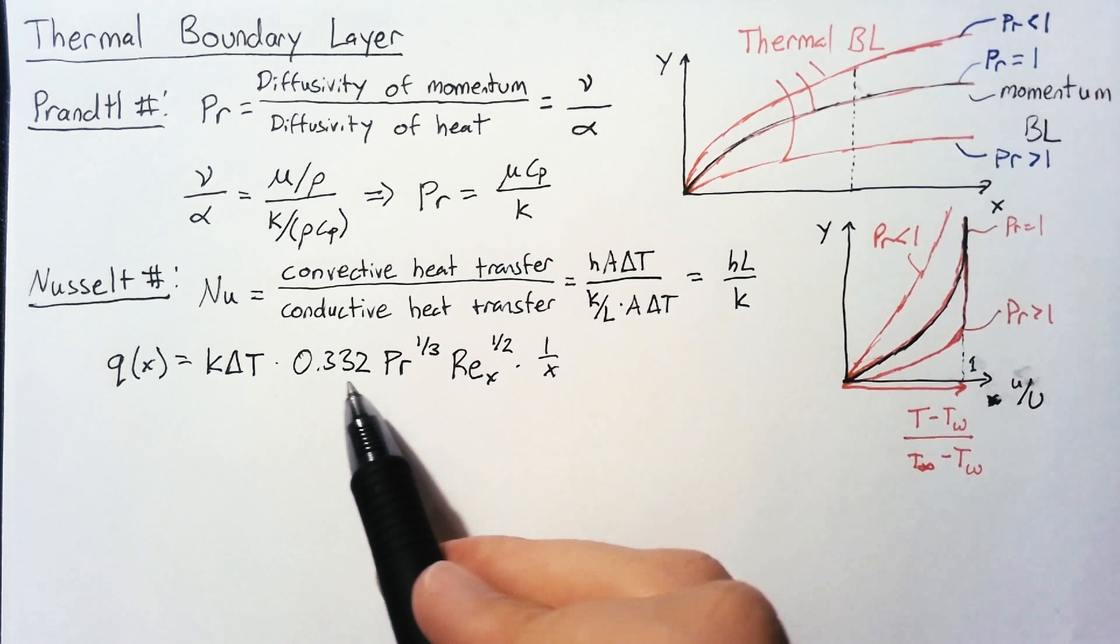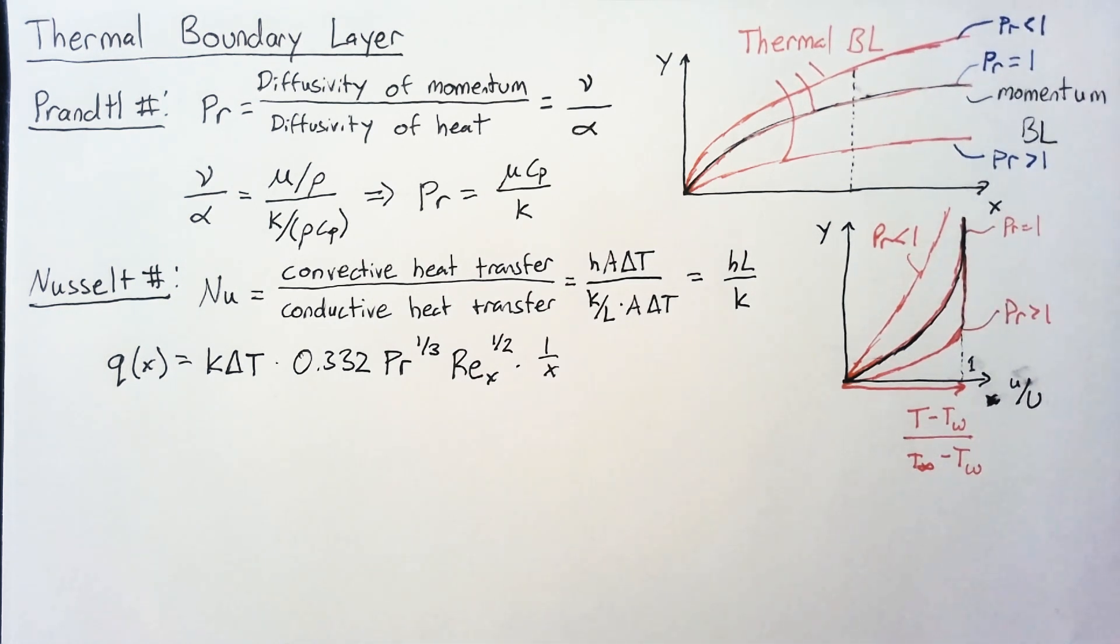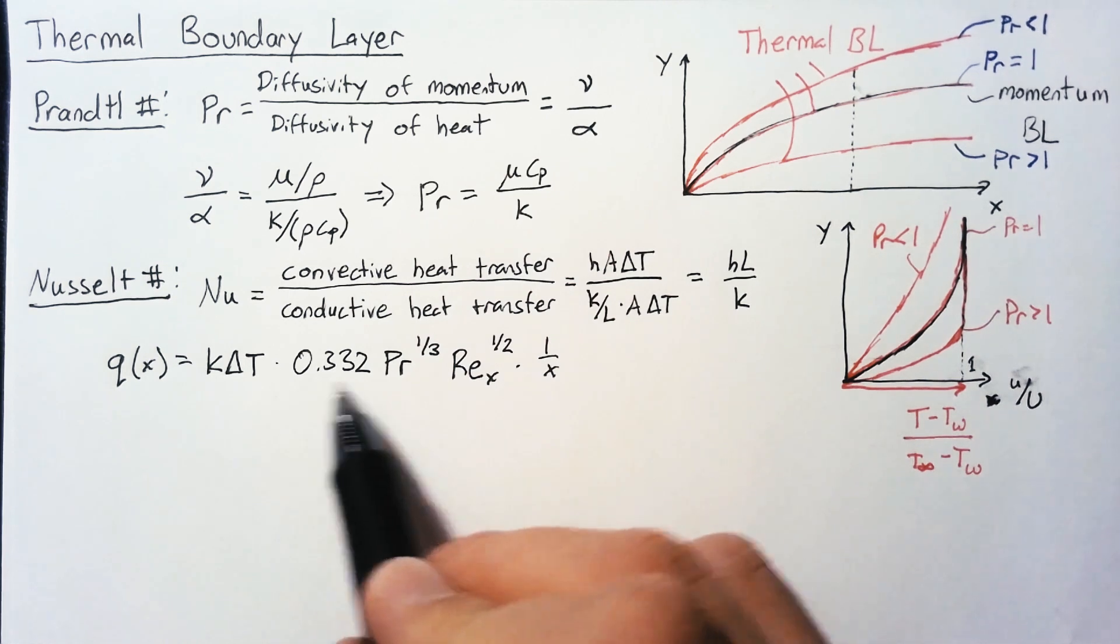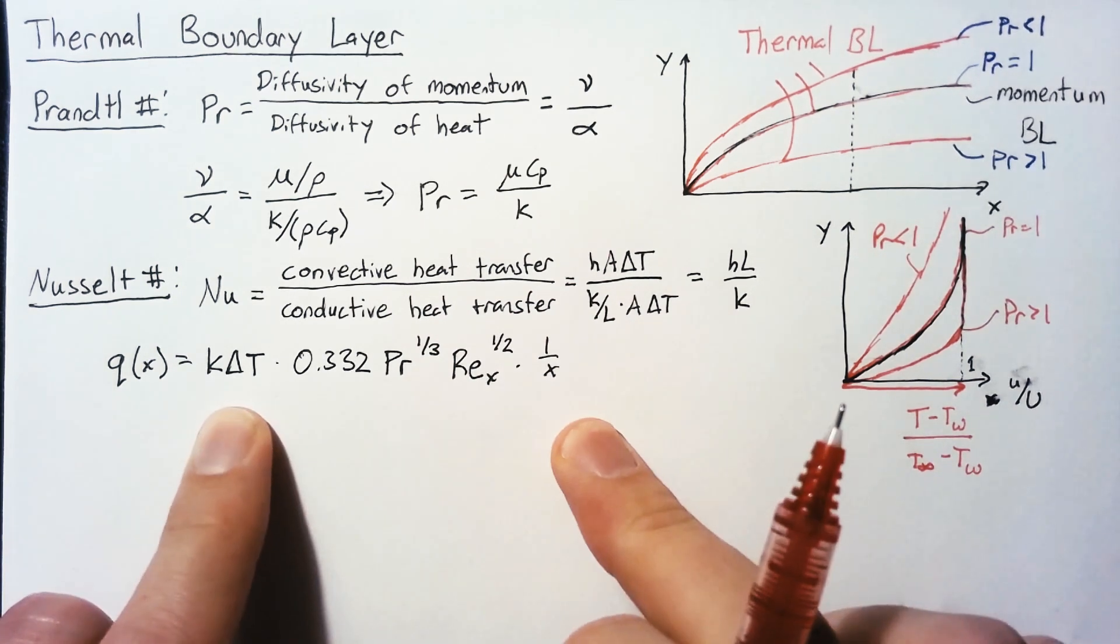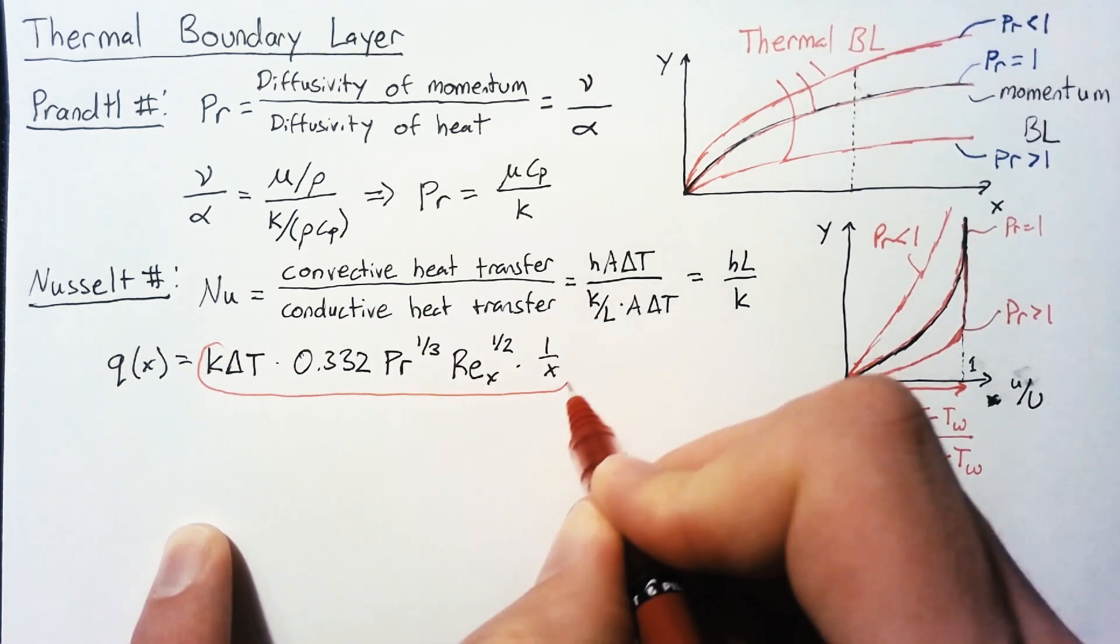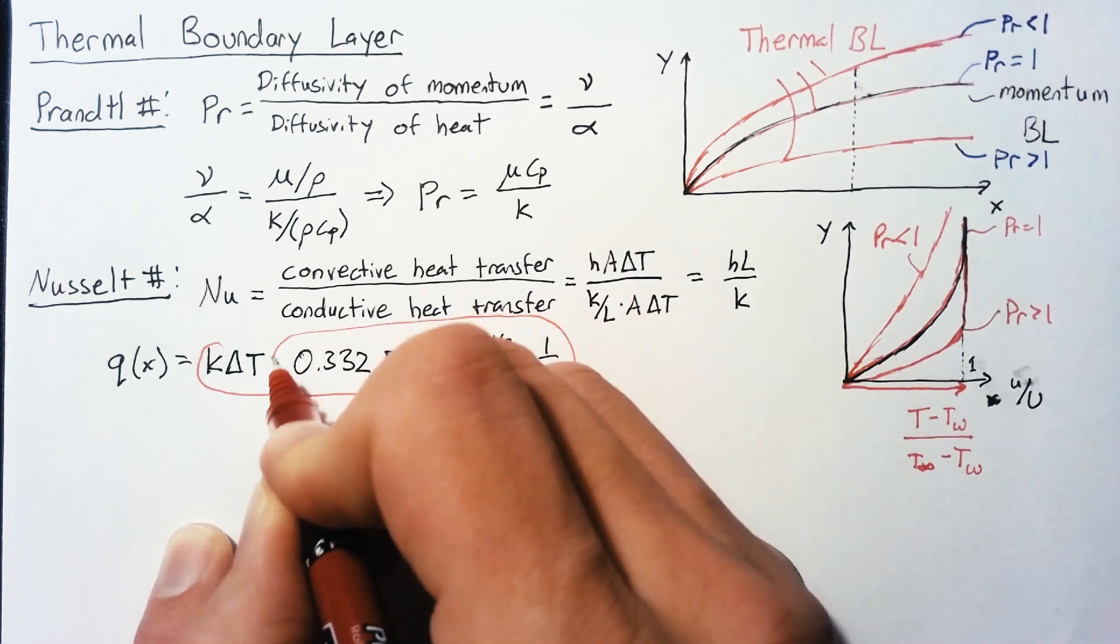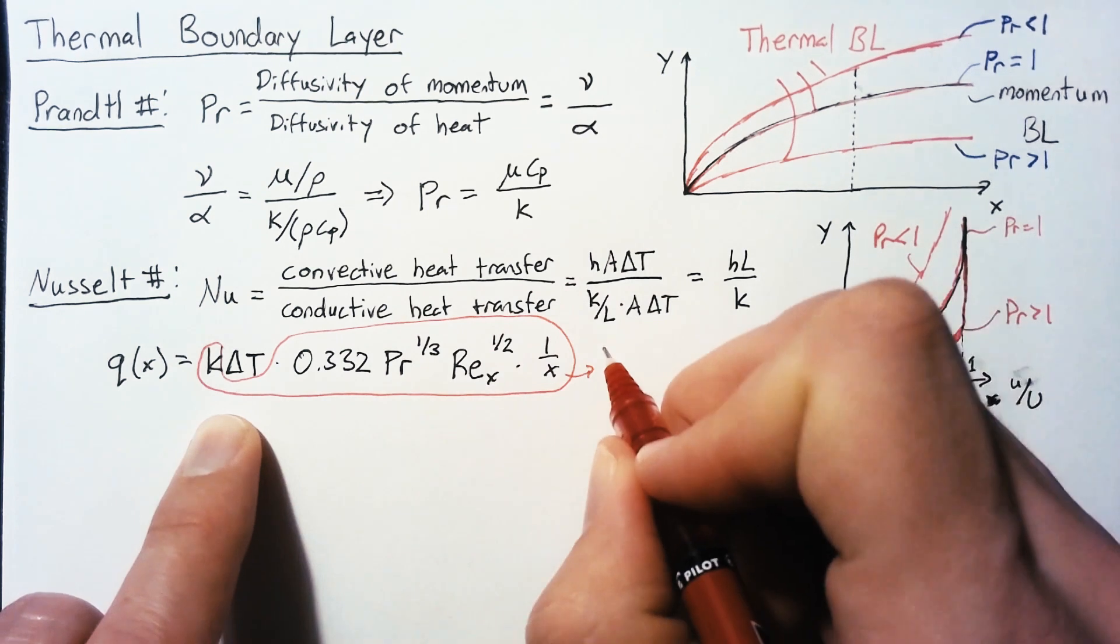This 0.332 term should look a little bit familiar. It's half of the 0.664 that you get from the momentum boundary layer whenever you're solving for friction drag. It's a bit involved to get into here, but you can use the same sort of ordinary differential equation to solve and find this 0.332 term. We have all of this together. What we're interested in here is what our convection heat transfer coefficient is, and really that's everything but this delta T.